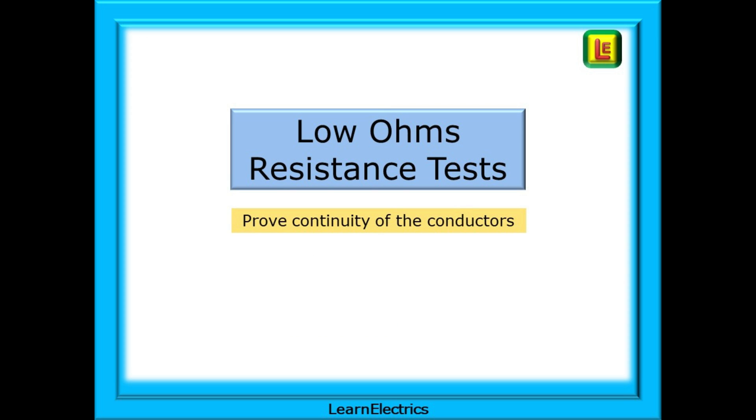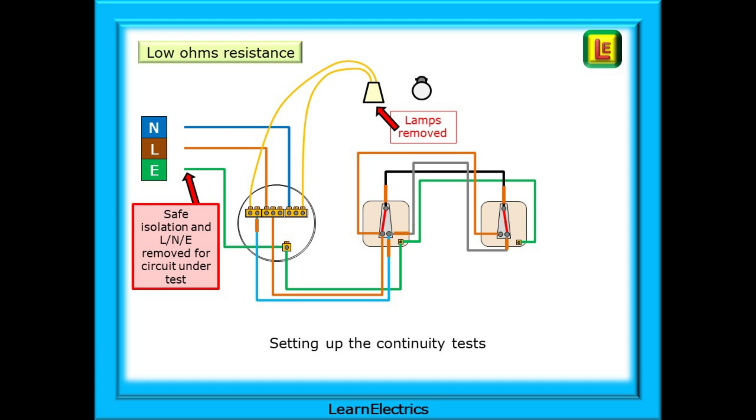Our first tests should be the low ohms resistance tests. This will prove the continuity of the circuit conductors, an important first step. For this radial lighting circuit these tests will give us the R1 plus R2 readings that can be entered onto the test certificate and are also used for determining what ZS should be. These are dead tests so carry out safe isolation as a first step. All lamps and transformers etc should be removed from circuit so that we are left with just the wires on their own. Anything left in circuit may give incorrect readings.